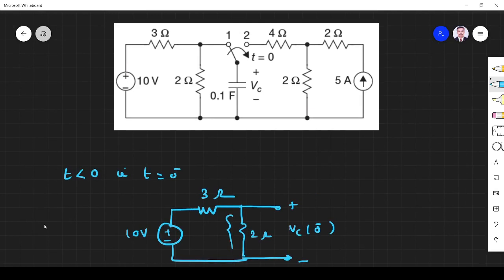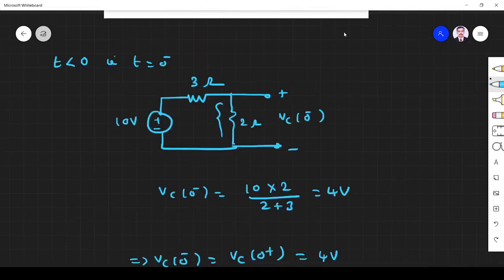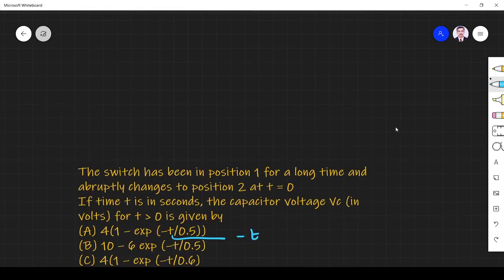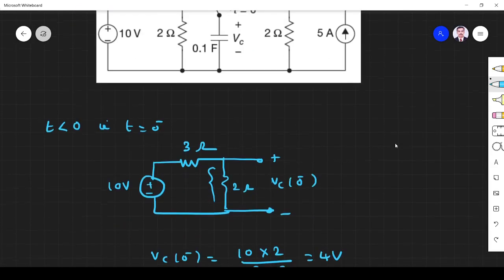The switch is closed at t equals 0. So when at t equals 0, the switch moves to position 2. When t tends to infinity, that is under steady state, the switch moves to position 2. Here we have 4 ohm, 2 ohm, 4 ohm.